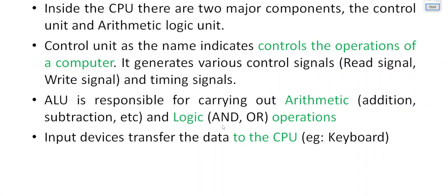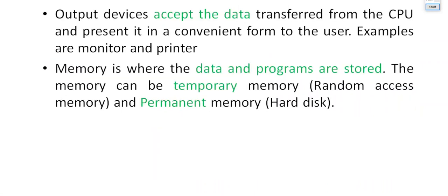Input devices transfer data to the CPU. For example, a keyboard is an input device — whatever keys you type are displayed on the screen. That screen or monitor is called an output device. Another example of an output device is a printer. Memory is where programs and data are stored.